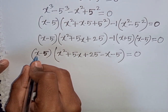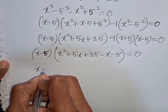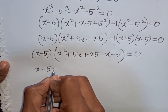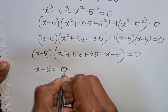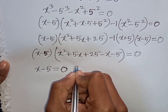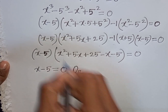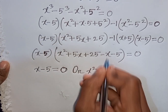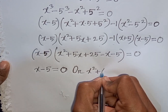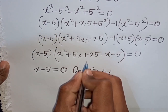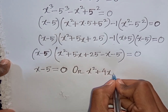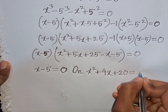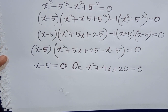Now we can write here: x minus 5 is equal to 0, or x square plus 5x minus x — that means it will be plus 4x — then plus 25 minus 5, that means it will be plus 20, then is equal to 0.